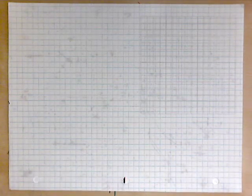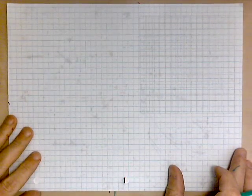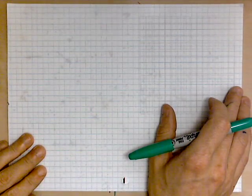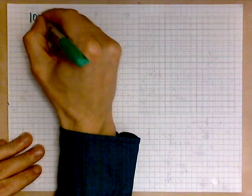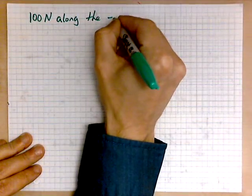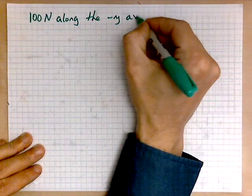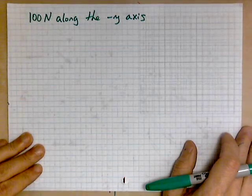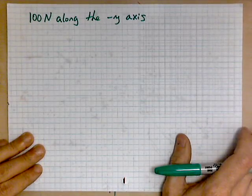This time I will not draw any pictures. We will take a purely algebraic approach. I will use colors to distinguish. Say you have a resultant vector which is 100 newtons along the negative y-axis. This is our resultant vector — 100 newtons along the negative y-axis. That's the first step.